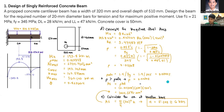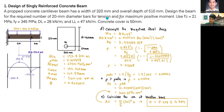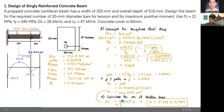The next step is to calculate AS using ρ × b × d, giving AS = 1,664.5376 mm². Using AS = (π/4) × 20² × N, we solve for N = 5.298. Since we cannot have a decimal number of bars, we round up to 6. Therefore, six 20 mm diameter tension bars are required.